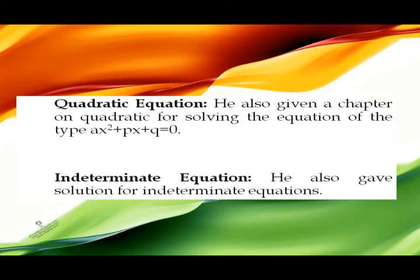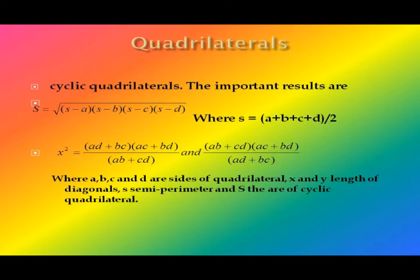Indeterminate equations: He also gave solutions for indeterminate equations. Cyclic quadrilateral: He made a fairly complete study of cyclic quadrilaterals. The important result is S = √((s−a)(s−b)(s−c)(s−d)), where s = (a+b+c+d)/2. He also proved that if a²+b²=c² and d²+e²=f², then the quadrilateral with sides a, f, c, e and diagonals at right angles is cyclic. This figure is called Brahmagupta's Trapezium.